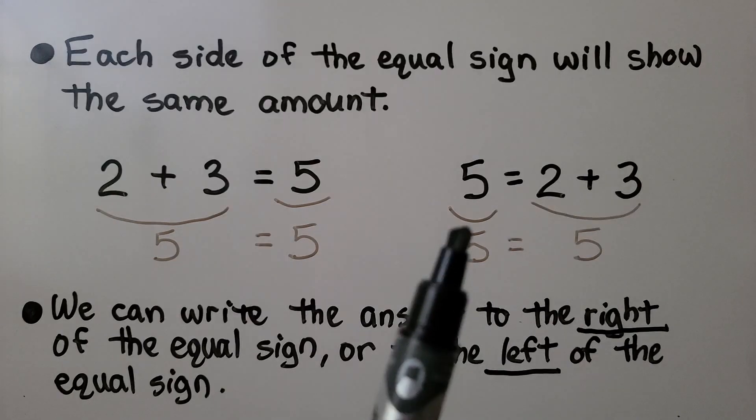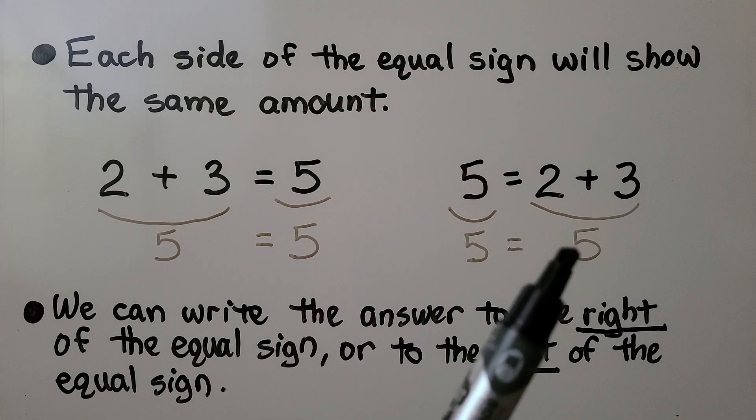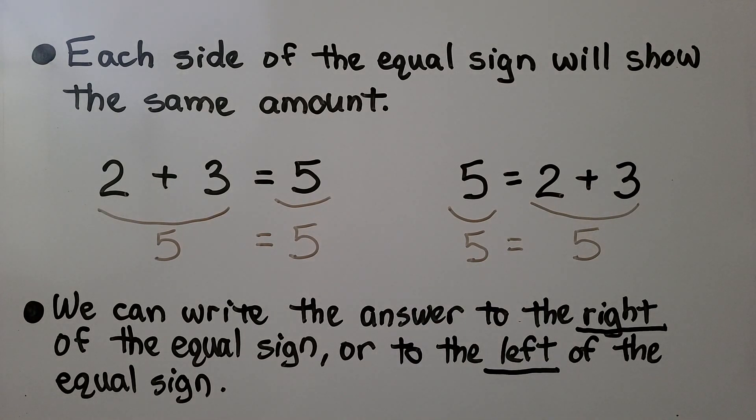We can also have it where the sum is in the front on the left side. The left side is 5 and the right side is 5. We can write the answer to the right of the equal sign or to the left of the equal sign.